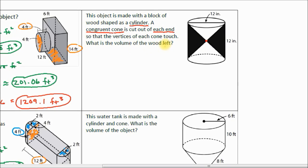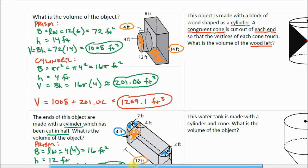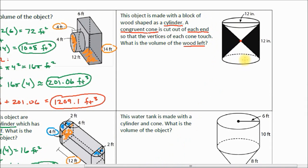What is the volume of the wood left? When it says 'the wood left,' that means we're going to take a cylinder — our original shape — we're going to cut out these two congruent cones, and we're going to see what is left over after that. The previous problems were adding problems: we took a square prism and added it to a cylinder. In this case, we're taking a cylinder and we're going to cut out two cones.